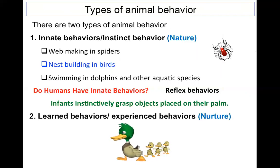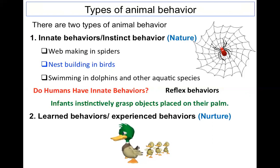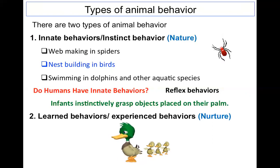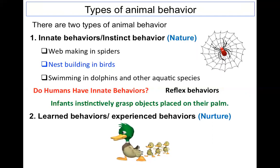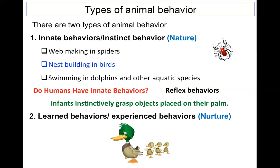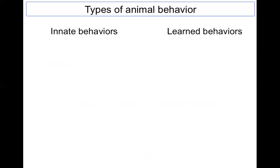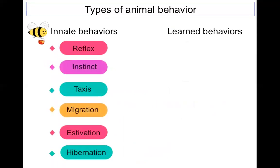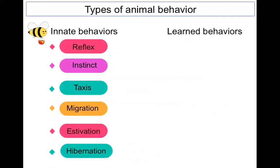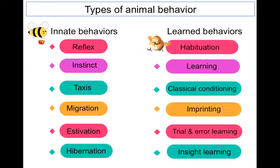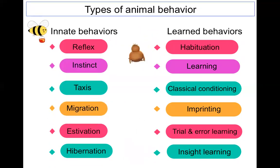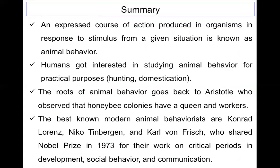The next type is learned behavior or experienced behavior, also called nurture behavior. For example, a mother guiding her child for food and protection from enemies — behavior learned from parents or society is called nurture behavior. Types of innate behavior include reflex, instinct, taxes, migration, estivation, and hibernation. Types of learned behavior include habituation, classical conditioning, imprinting, trial-and-error learning, and insight learning.